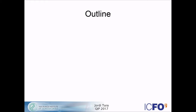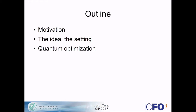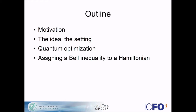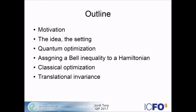This is the outline of my talk. I will first motivate why we want to study this question, then present the general idea of our method and define the setting. Then I will discuss how one carries out the quantum optimization, how one assigns an inequality to a Hamiltonian to detect quantum non-local correlations, how to perform the classical optimization, what happens with symmetry like translational invariance, illustrate the method with examples, and then conclude with further directions of research.